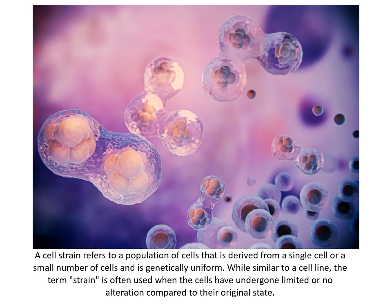To understand cell strain by analogy: imagine a family tree where each member inherits specific traits from their parents. A cell strain would be like a particular branch of the family tree that remains relatively unchanged over generations, preserving specific characters from their parents. Members of this branch share common features — much like a cell strain maintains genetic uniformity derived from a single or a few cells. Just as this branch represents a stable, distinct subset within a larger family, a cell strain represents a stable population of cells within a laboratory setting.